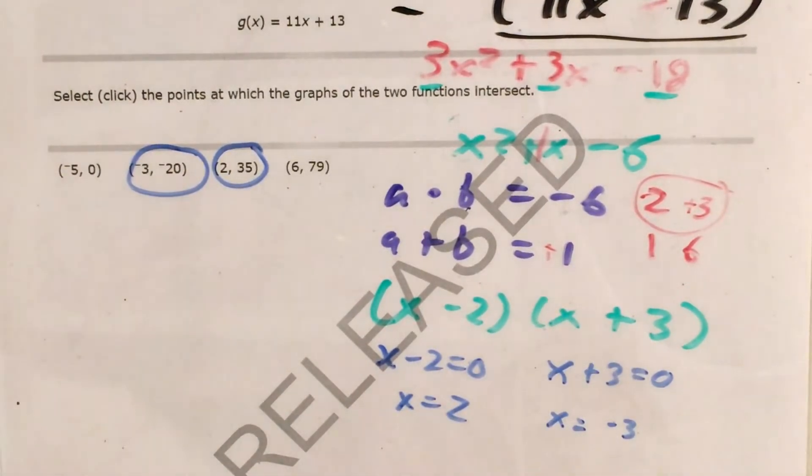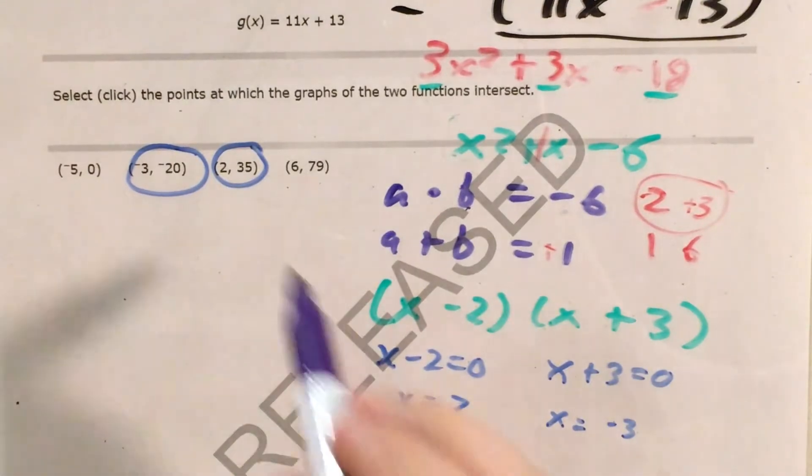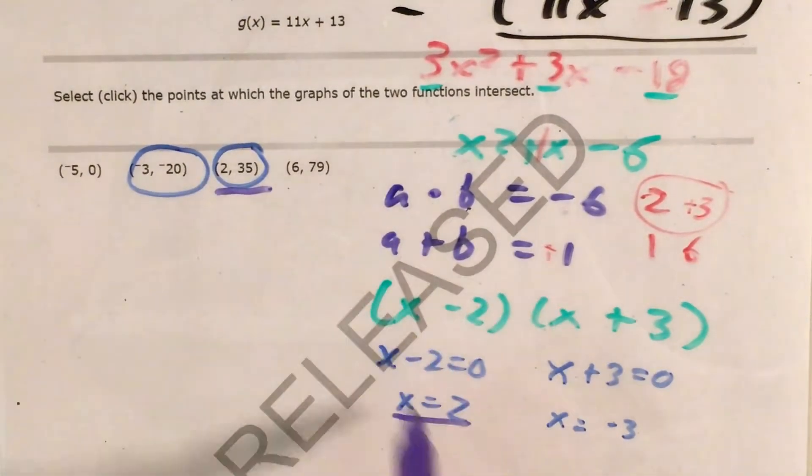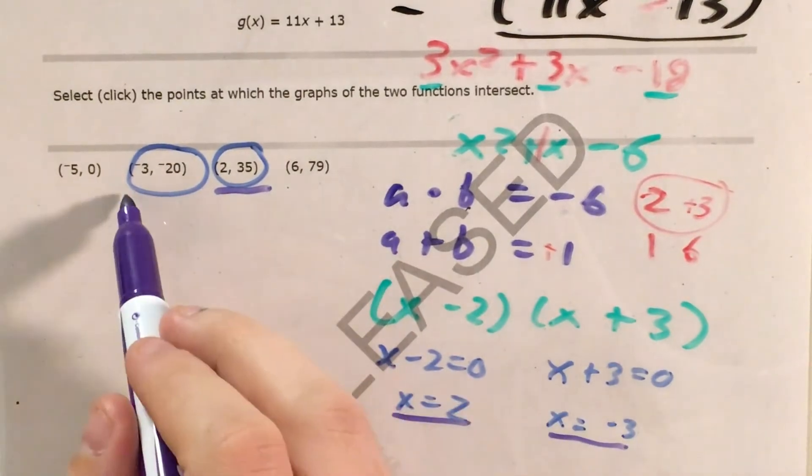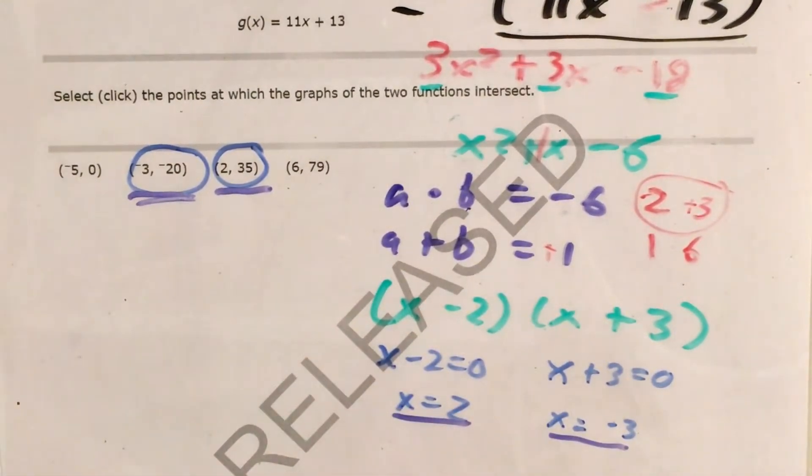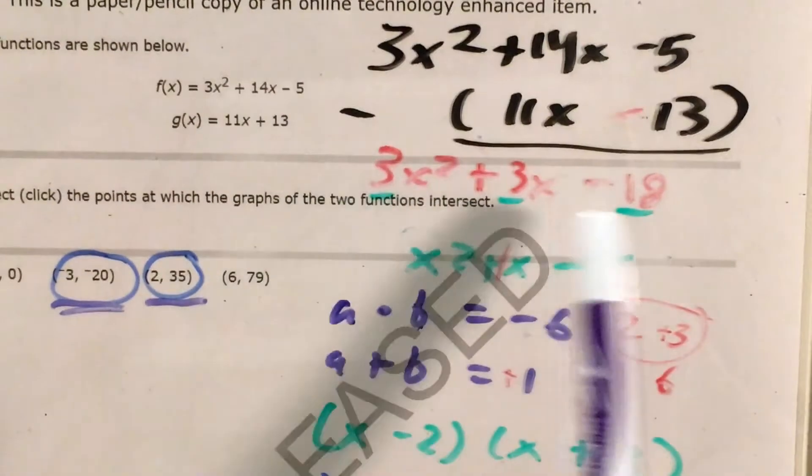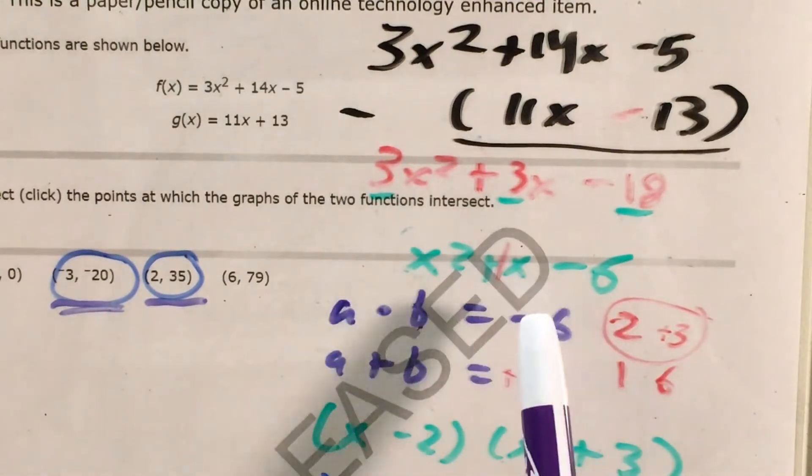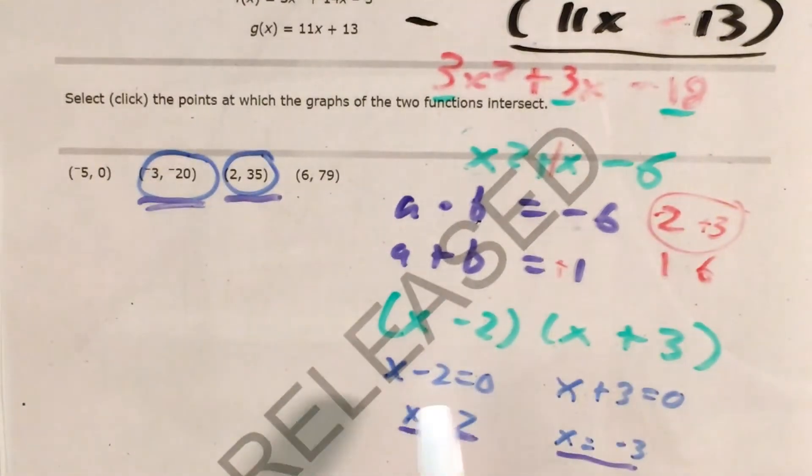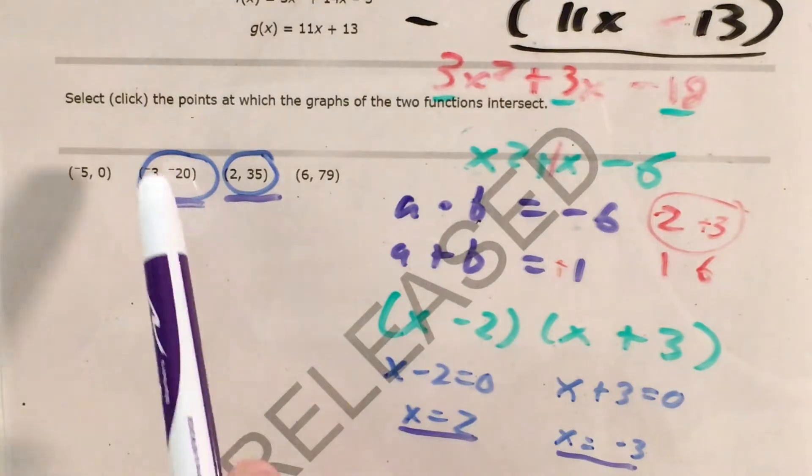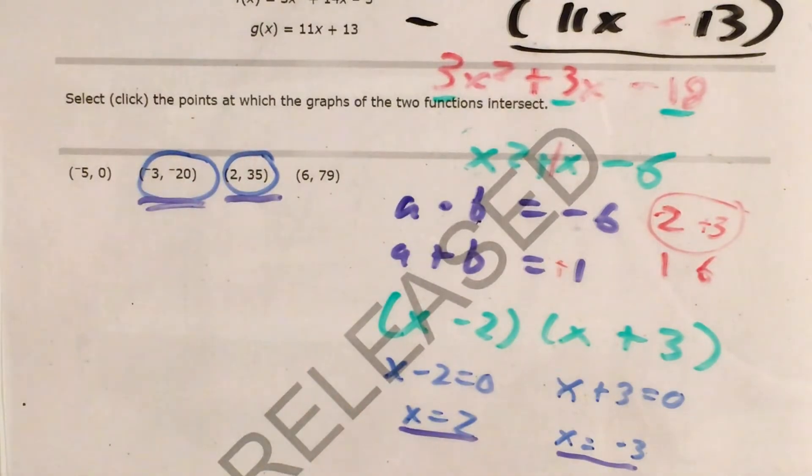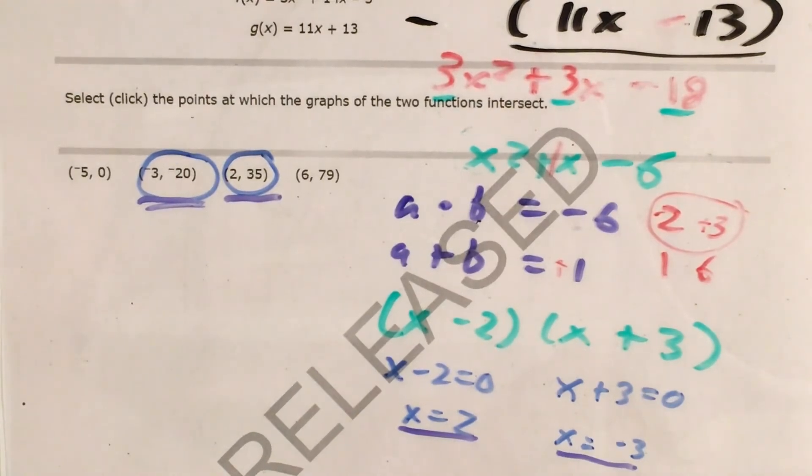And at this point, the last thing I want to do for this question is just compare this x to this point, which also has an x of 2, and this x to this point, which also has an x of negative 3. So the method of factoring and subtracting this function from this one got me the same two x values, but the calculator method has the advantage of also giving you the y values so that you can be absolutely sure because they might try to trick you and throw in like negative 3 and 19 or something like that.